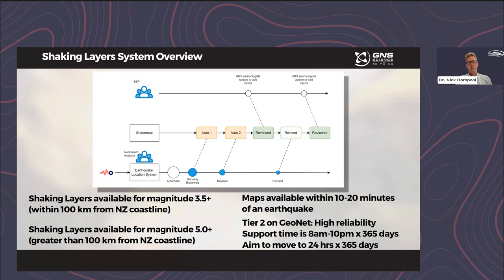For an earthquake to trigger ShakeMap we need a couple of criteria. First is a magnitude criteria — if it's within 100 kilometers of the New Zealand coastline and above magnitude 3.5, this will trigger a ShakeMap and Shaking Layers process. For earthquakes further than 100 kilometers from the New Zealand coastline, if the earthquake is above magnitude 5.0 it will also trigger a Shaking Layers and ShakeMap process. The distance we are considering extends up through the Kermadecs just south of Tonga, capturing large earthquakes that may occur on the Kermadec subduction zone.